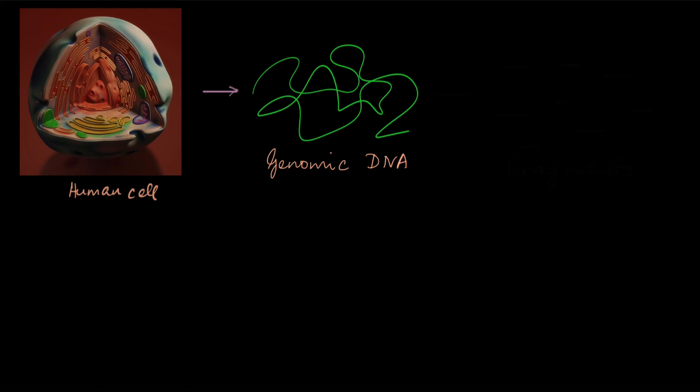What they did was they isolated genomic DNA from the human cell and genomic DNA has all the chromosomes. So they have to be broken down into smaller pieces which is what they did. How do you do that? There are various enzymes available and these enzymes can cut in at different places and hence we can get smaller fragments.